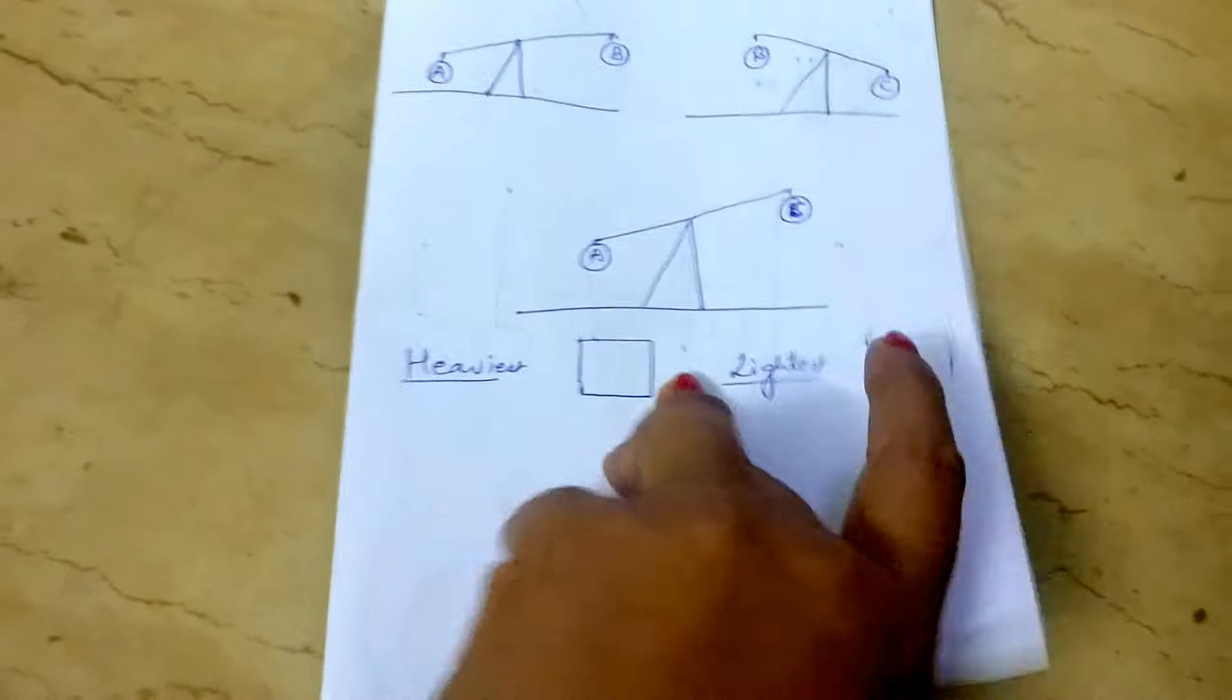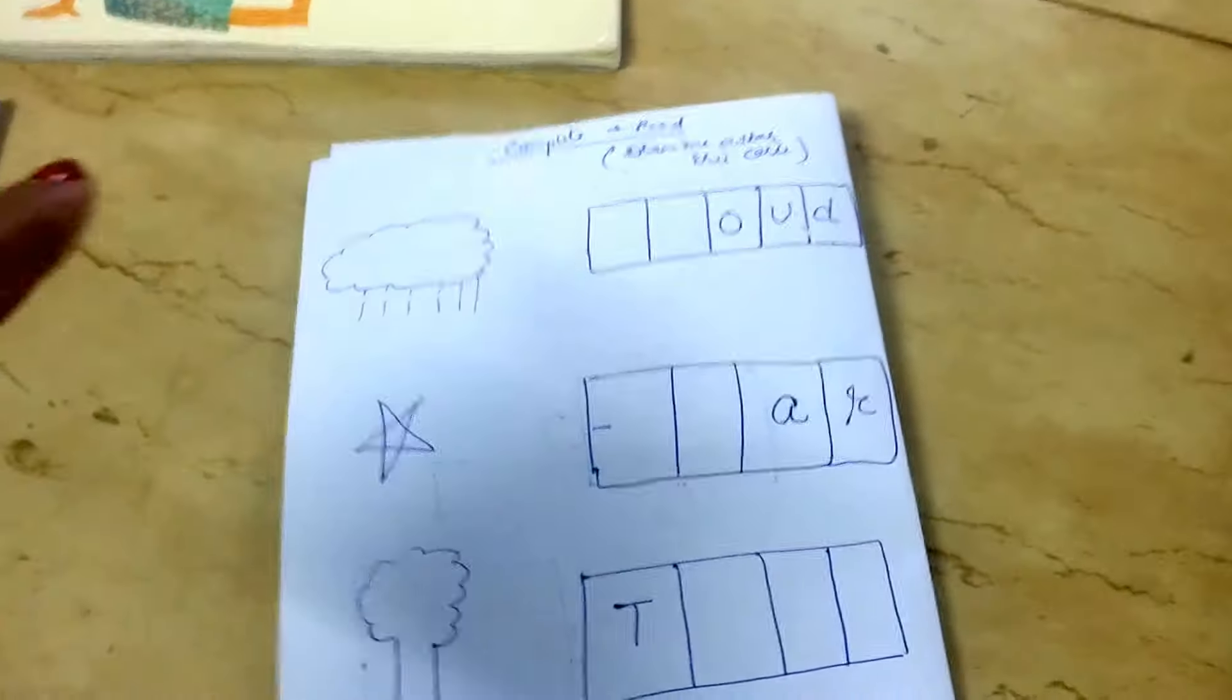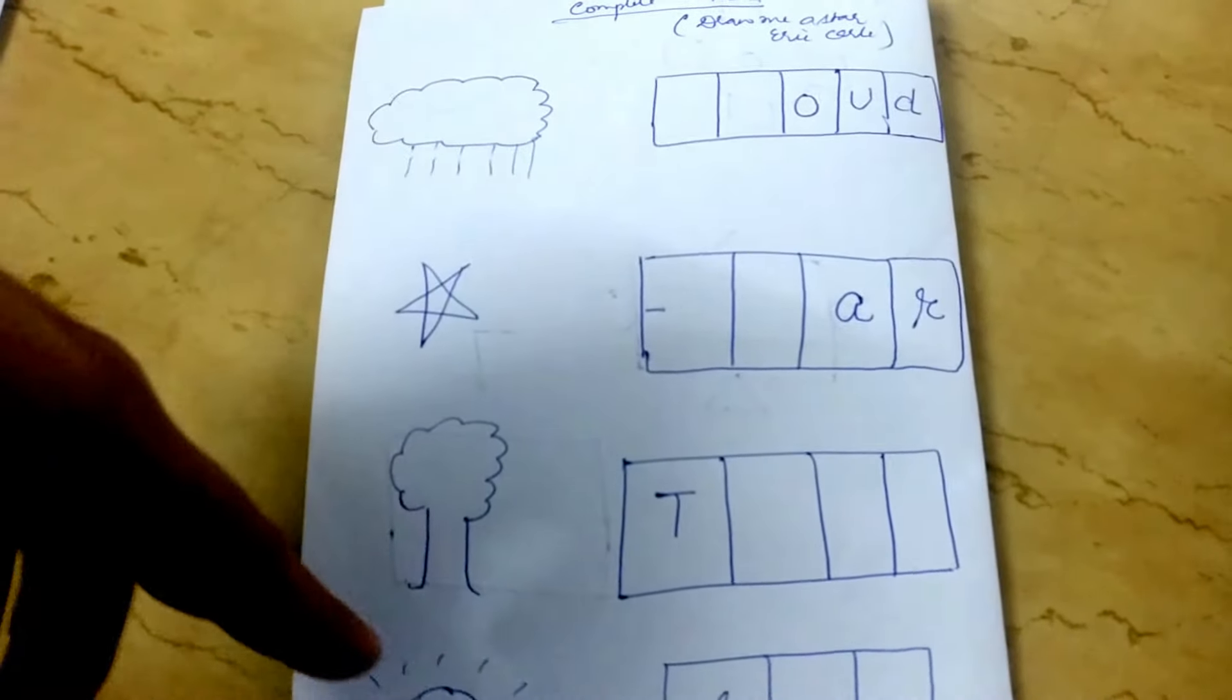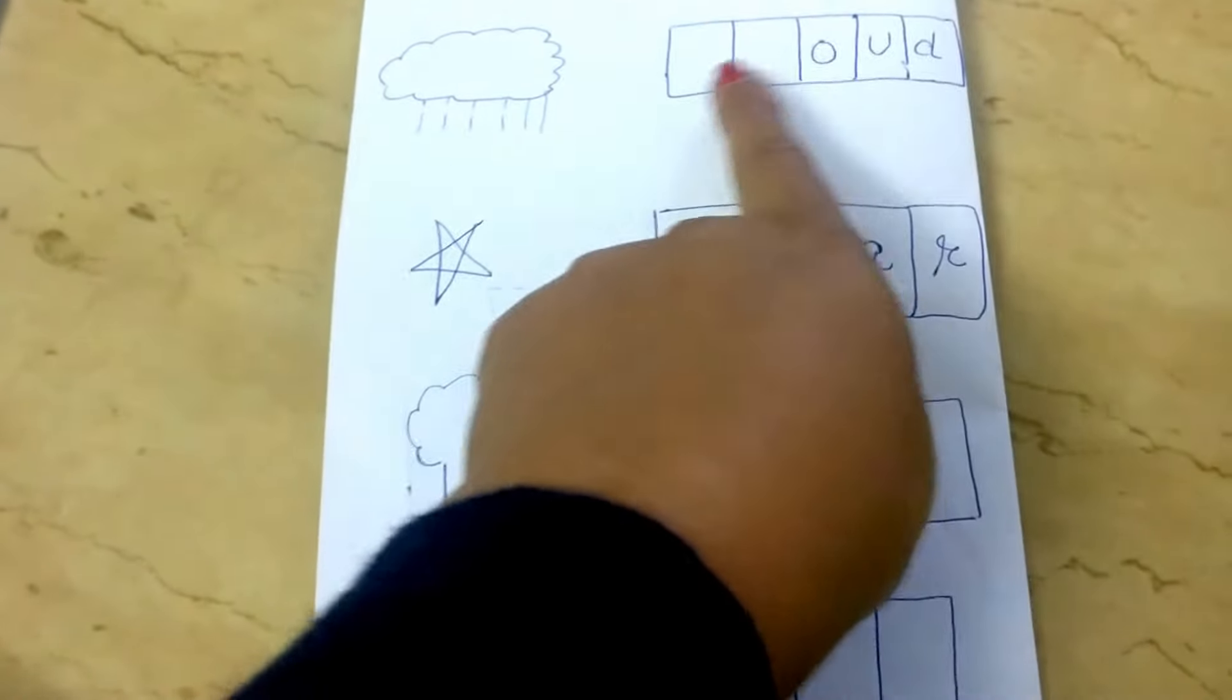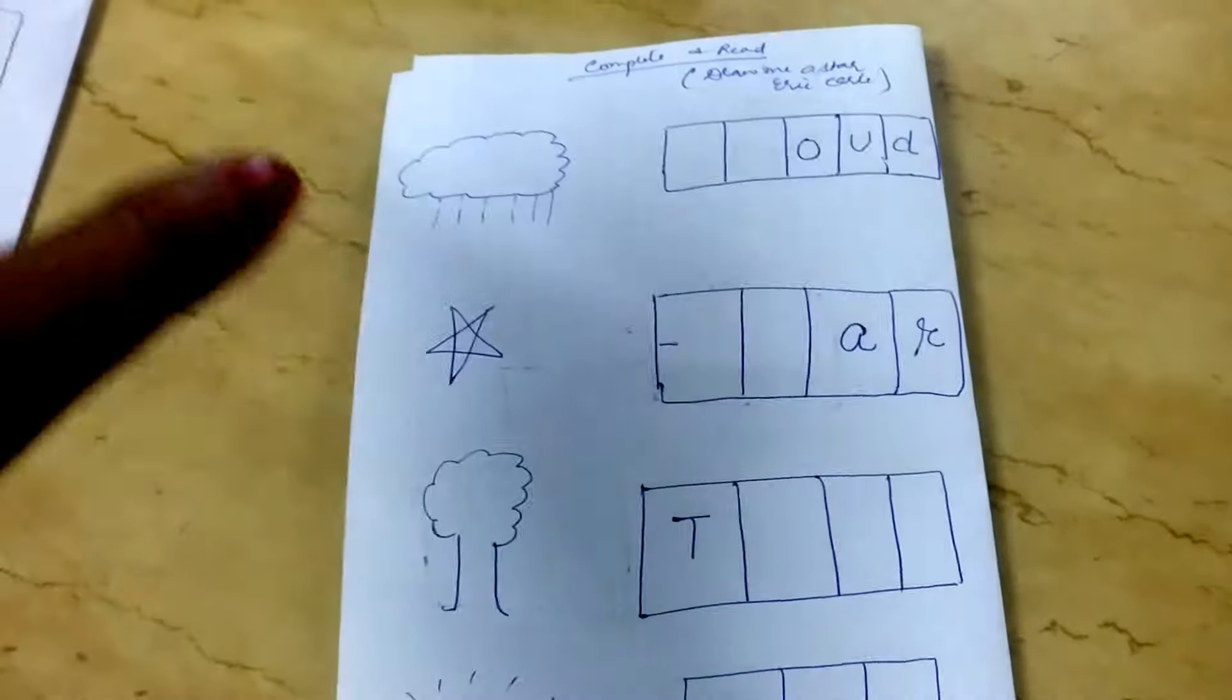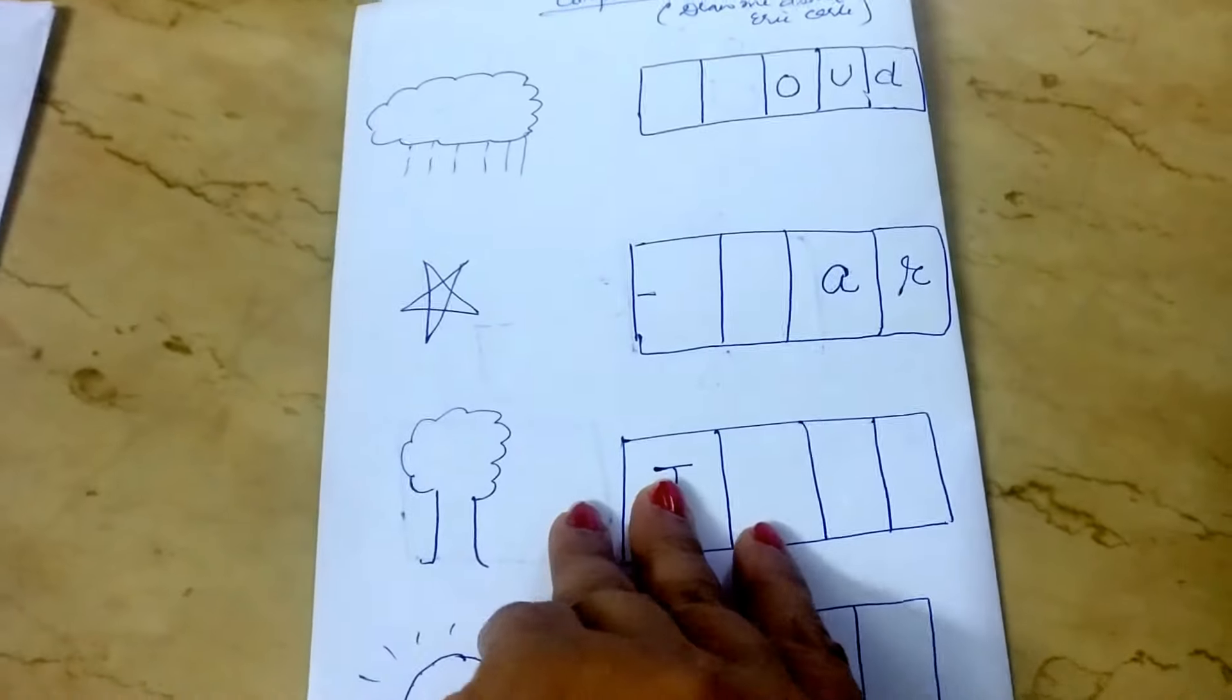This last one is related to a book we were reading, Draw Me a Star. We were drawing the shapes and coloring them. These are the words which are here: rain, cloud, star, tree, and sun. I just wrote some clues. She has to write cloud, root, tree, and some very basic spellings. Just because we were doing this book whole day, drawing and coloring on paper, I thought let me do something here related to the book.